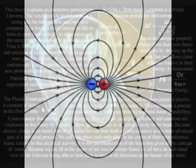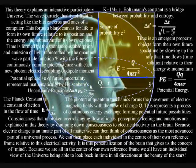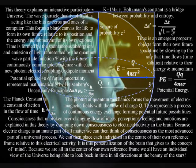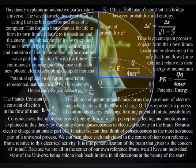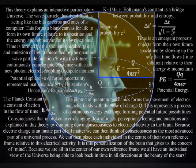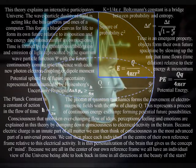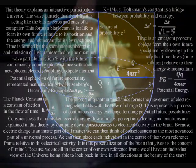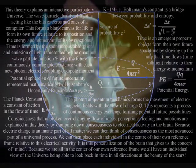By explaining consciousness as the electrical activity in the brain that is aware of its own electrical potential, this theory can place each individual in the centre of their own reference frame, in the moment of now, at the forefront of this process, relative to this electrical activity.